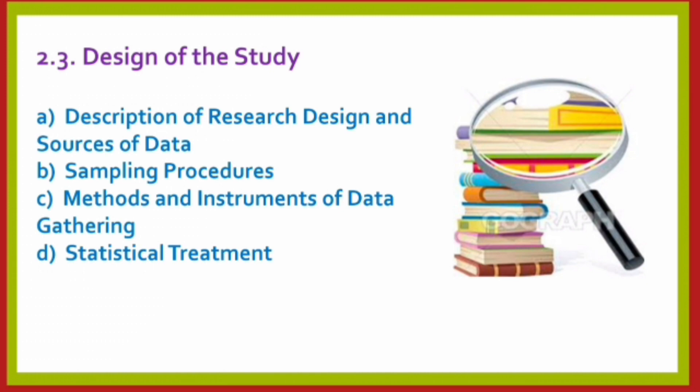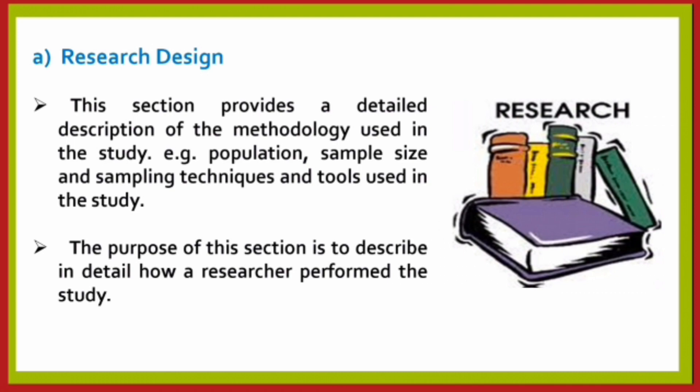The next section is the design of the study. The sub-points in this section are: description of research design and source of data, sampling procedure, methods and instruments of data gathering, and statistical treatment. This section provides a detailed description of the methodology used in the study — that is, population, sample size, sampling techniques, and tools used. The purpose is to describe in detail how a researcher performed the study. Research design is the framework of research methods and techniques chosen by a researcher to conduct a study, and it sets the methods and procedures used to collect and analyze data on variables specified in a particular research problem.